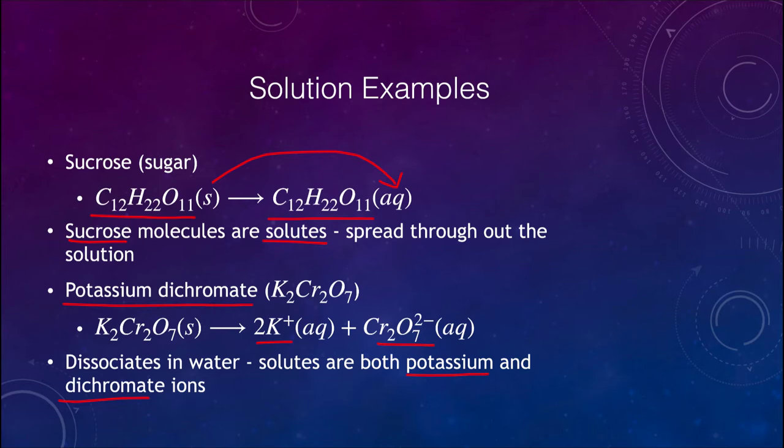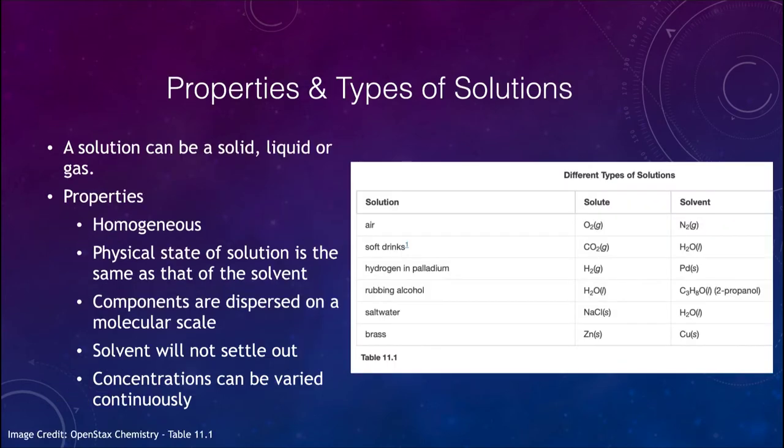Now we can look at some typical solutions and let's look at a few in a table here. One thing we have to consider is that a solution we tend to think of it as a liquid. However, a solution can also be a solid or a gas. You can look at examples here, a gas such as air is actually a solution. It is a mixture of different particles and the primary one would be nitrogen which is the solvent, and oxygen is the solute that is within that, but they are uniformly mixed together.